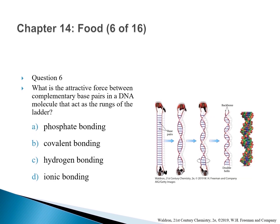Question 6: What is the attractive force between complementary base pairs in a DNA molecule that act as the rungs of the ladder? The correct answer is C — hydrogen bonding. DNA has two strands connected by complementary base pairs, and the four bases on one strand connect with the four bases on the other strand by hydrogen bonding.